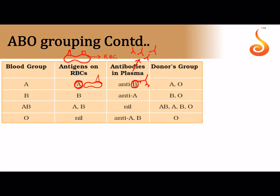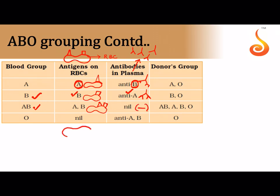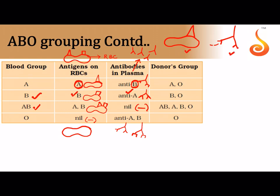A person with blood group B has antigen B on the RBC but the non-corresponding antibody A in their plasma. A person with blood group AB has both antigen A and antigen B on the RBC but no antibodies in their plasma. A person with blood group O has no antigens on the RBC but has both antibody A and antibody B in the plasma.